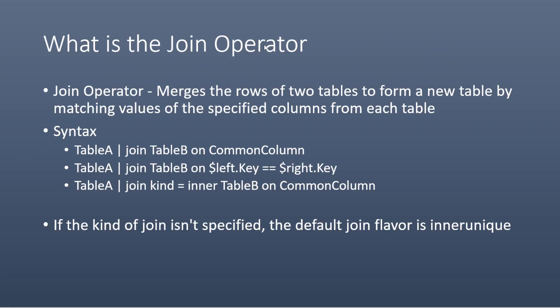Let's first talk about what the join operator represents. When we look at doing joins, we're basically merging tables together. The technical definition from Microsoft's documentation is: merging the rows of two tables to form a new table by matching the values of the specified columns from each table. You're grabbing pieces from different tables based on some property that's common between the two.